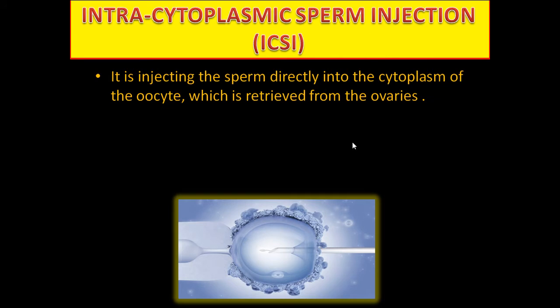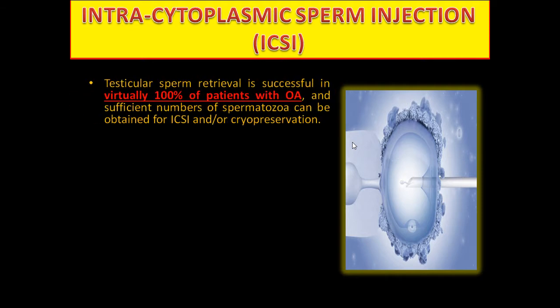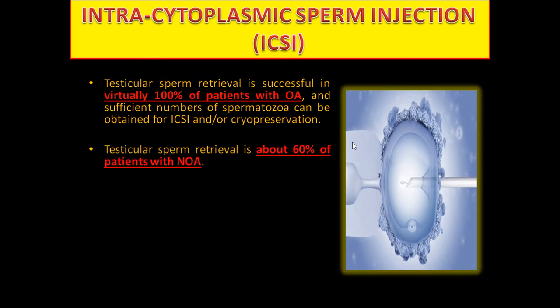Intracytoplasmic sperm injection (ICSI): injecting the sperm directly into the cytoplasm of the oocyte retrieved from the ovaries. This technique was developed and perfected by Brussels University. Testicular sperm retrieval is successful in virtually 100% of patients with obstructive azoospermia. Testicular sperm retrieval is above 60% of patients with non-obstructive azoospermia — this should be a take-home message.